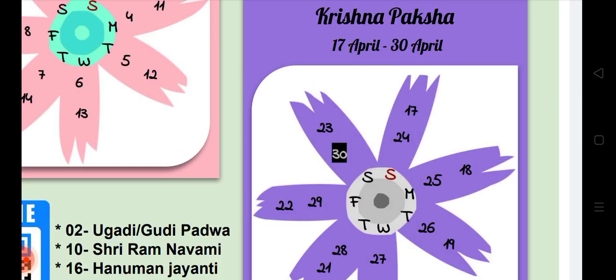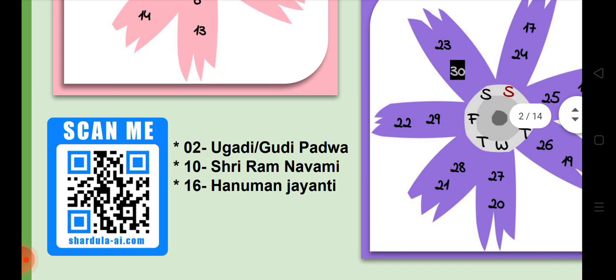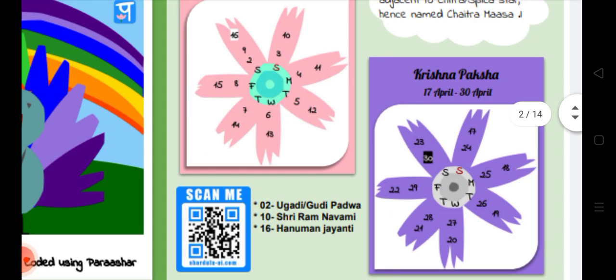So Krishna Paksha runs from 17th April to 30th April. On 2nd April we have Yugadi or Gudi Padva. On 10th we have Shri Ram Navami, and on 16th we have Hanuman Jayanti.